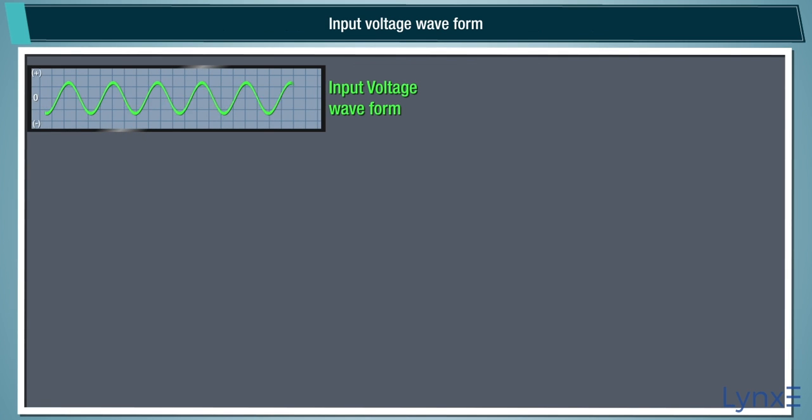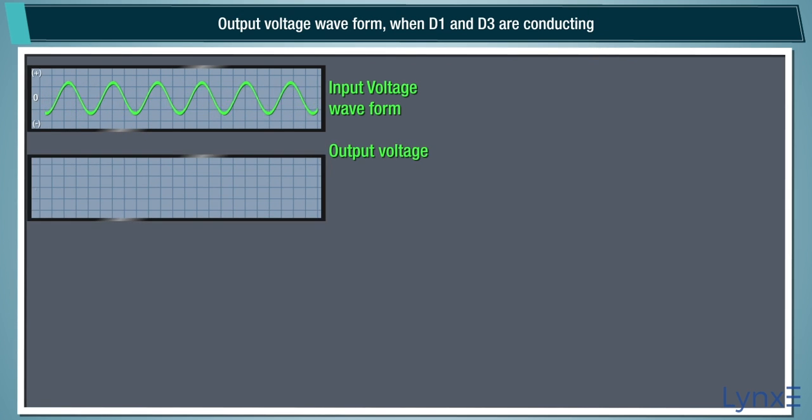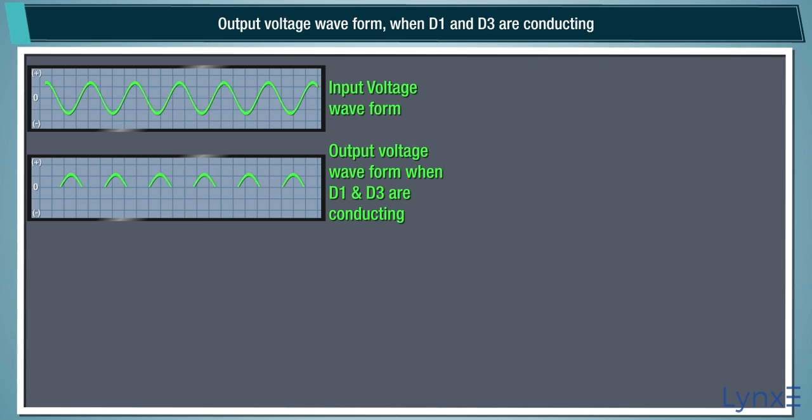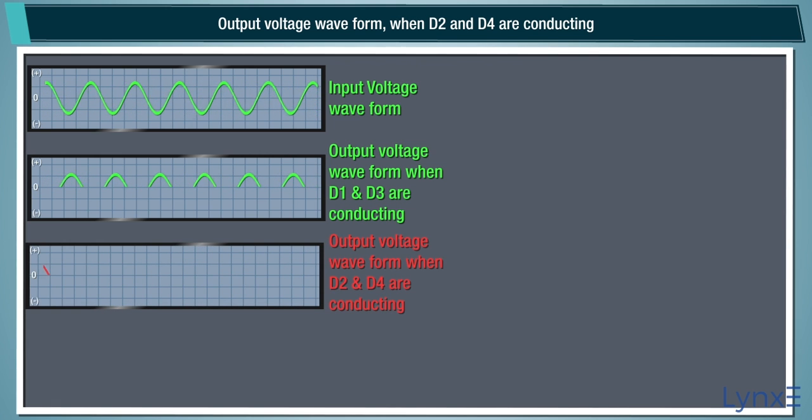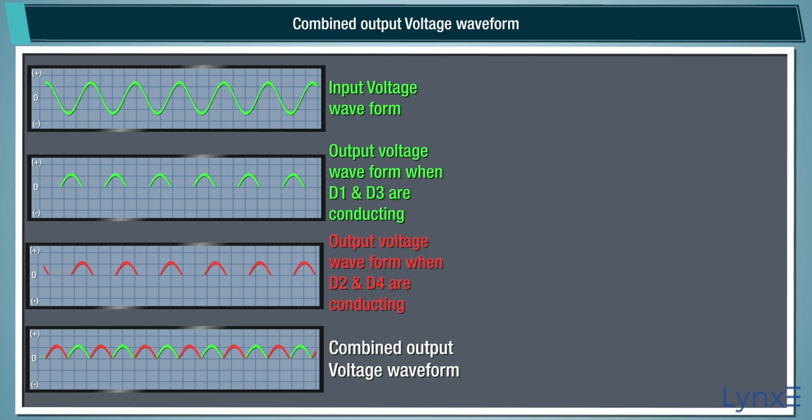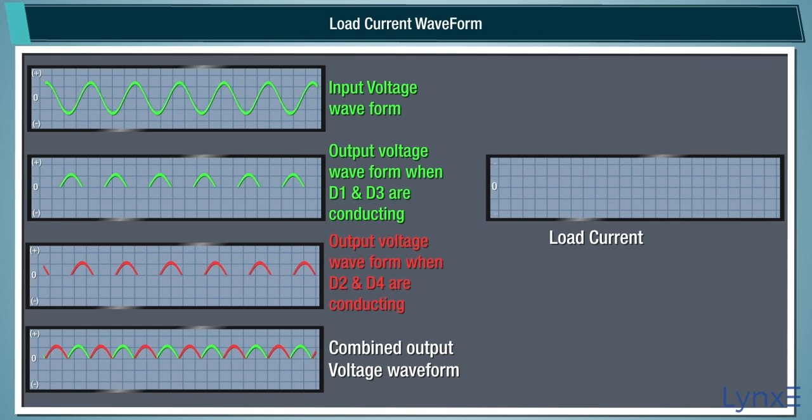The input and output waveform of the bridge rectifier as follow. Input voltage waveform. Output voltage waveform when D1 and D3 are conducting. Output voltage waveform when D2 and D4 are conducting. Combined output voltage waveform. Load current waveform.